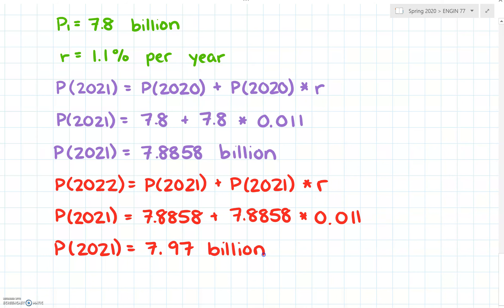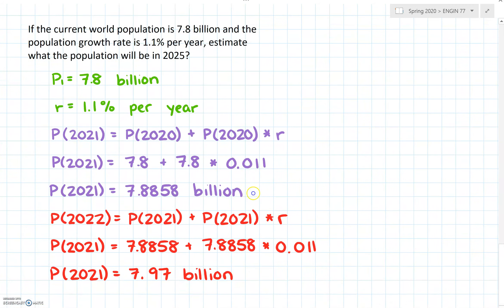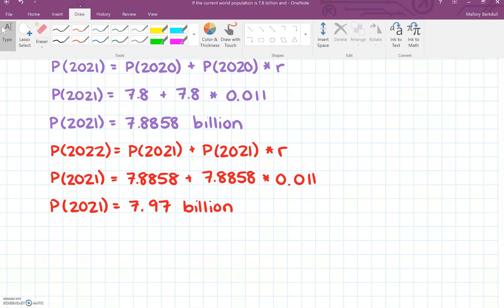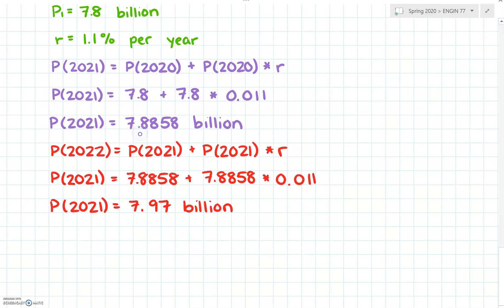We can continue doing this for every year until we get to 2025. Let's write this out as a table with the year in one column and our population in the next column.